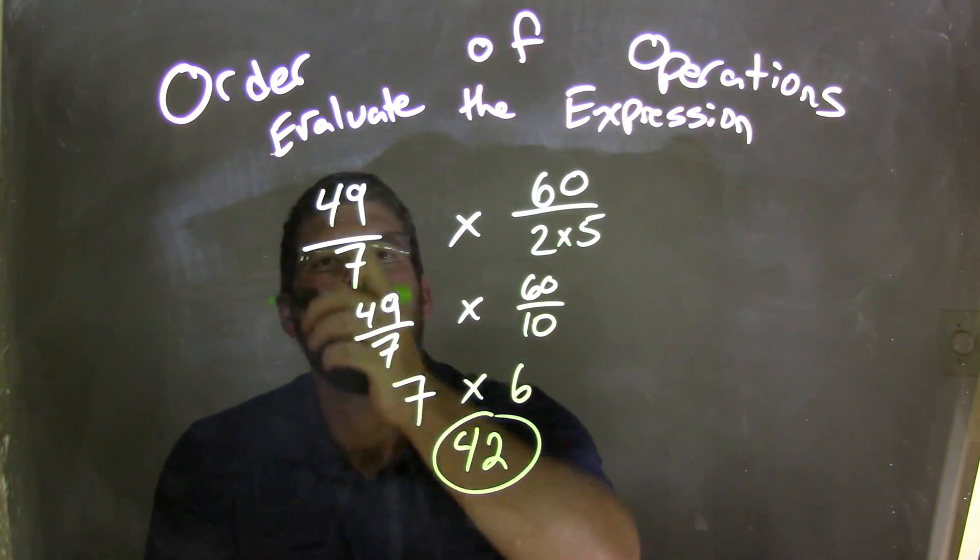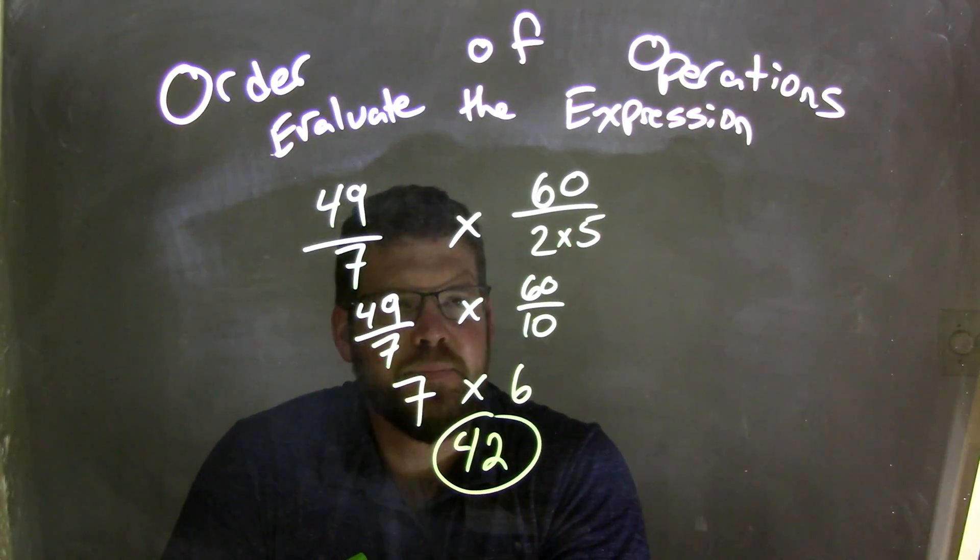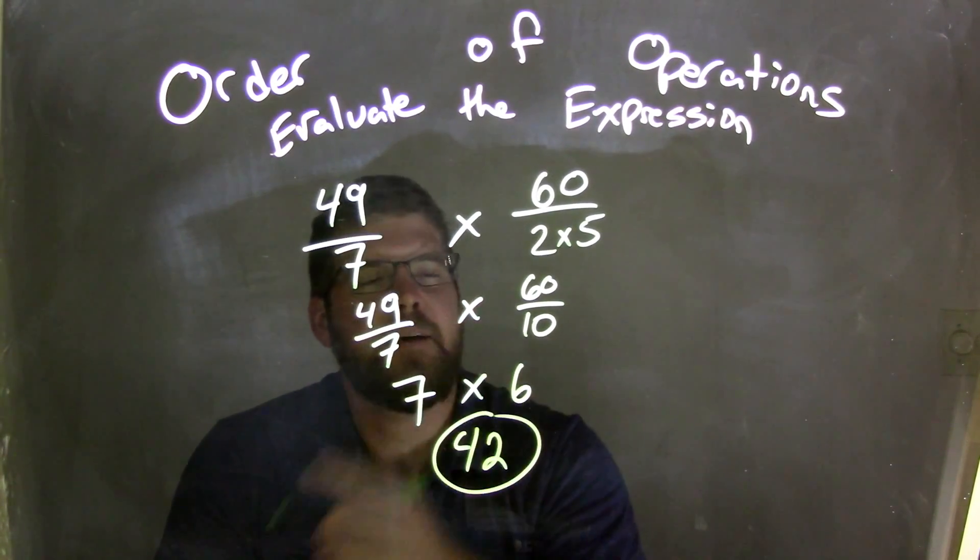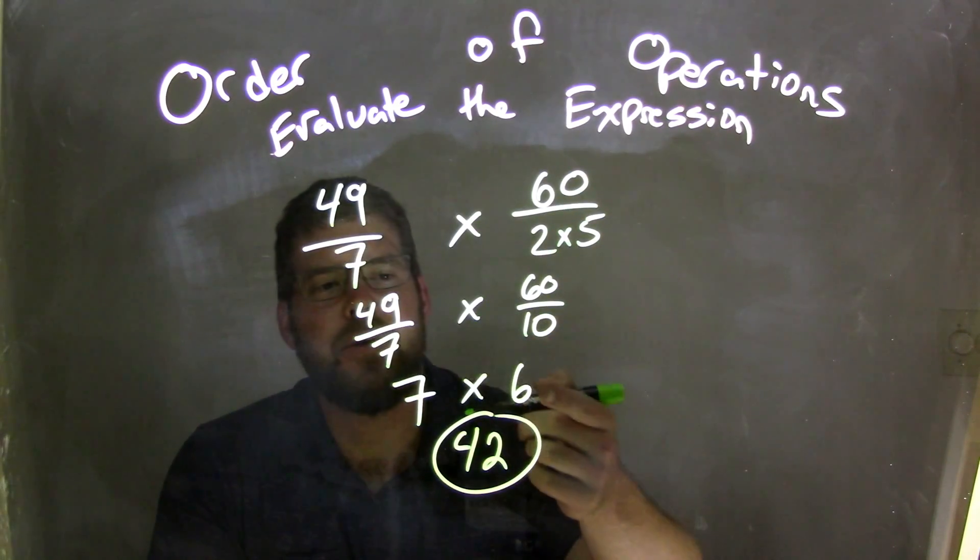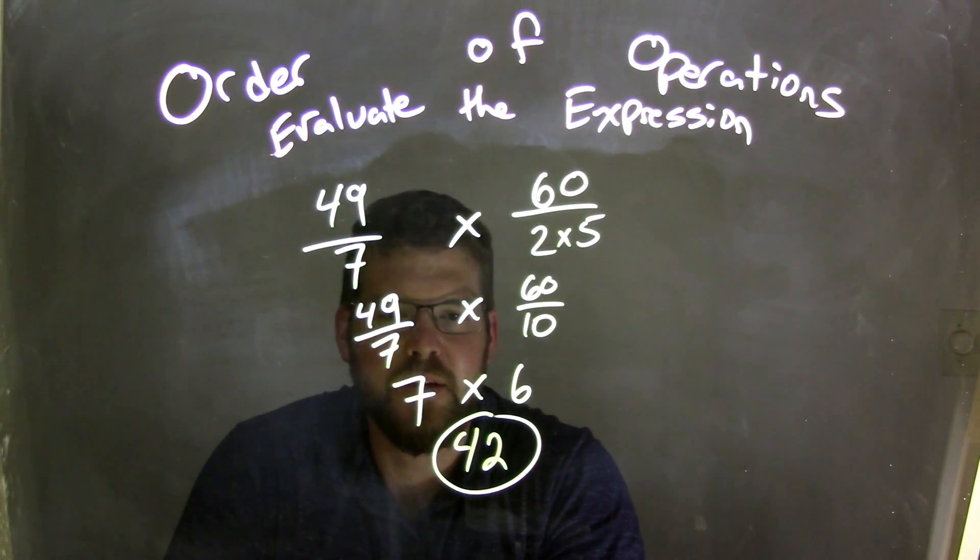So again, quick recap. We want to simplify the numerator and denominator of each fraction. So 2 times 5 is 10, and then we have 60 divided by 10 came out to be 6. 49 over 7, we left there, and then we simplify that to be 7. And 7 times 6 is 42. Cheers.